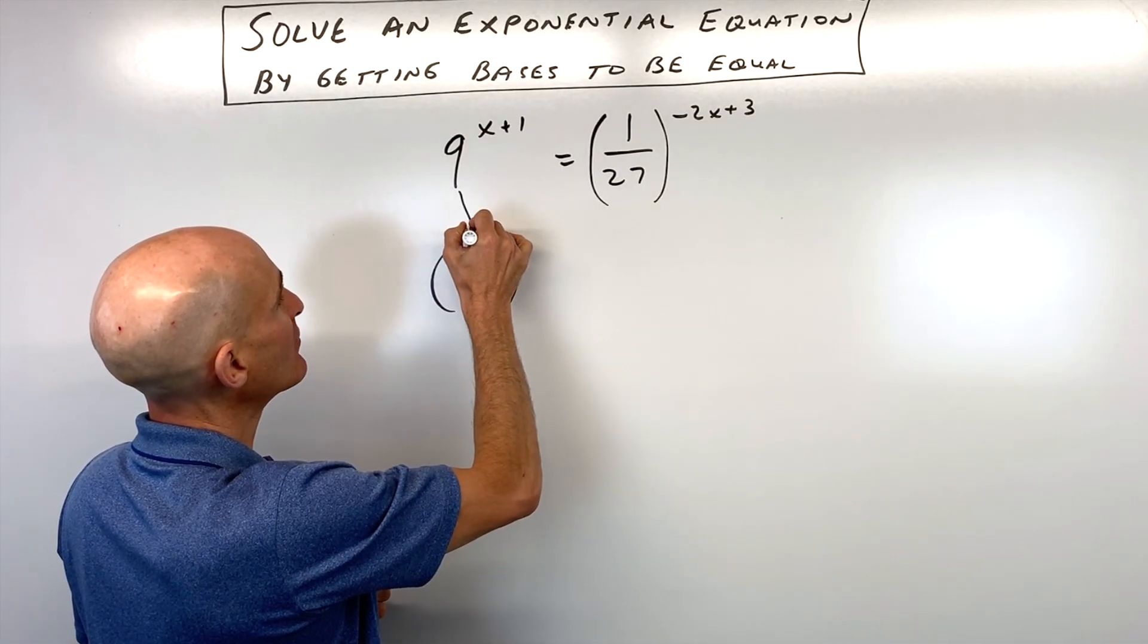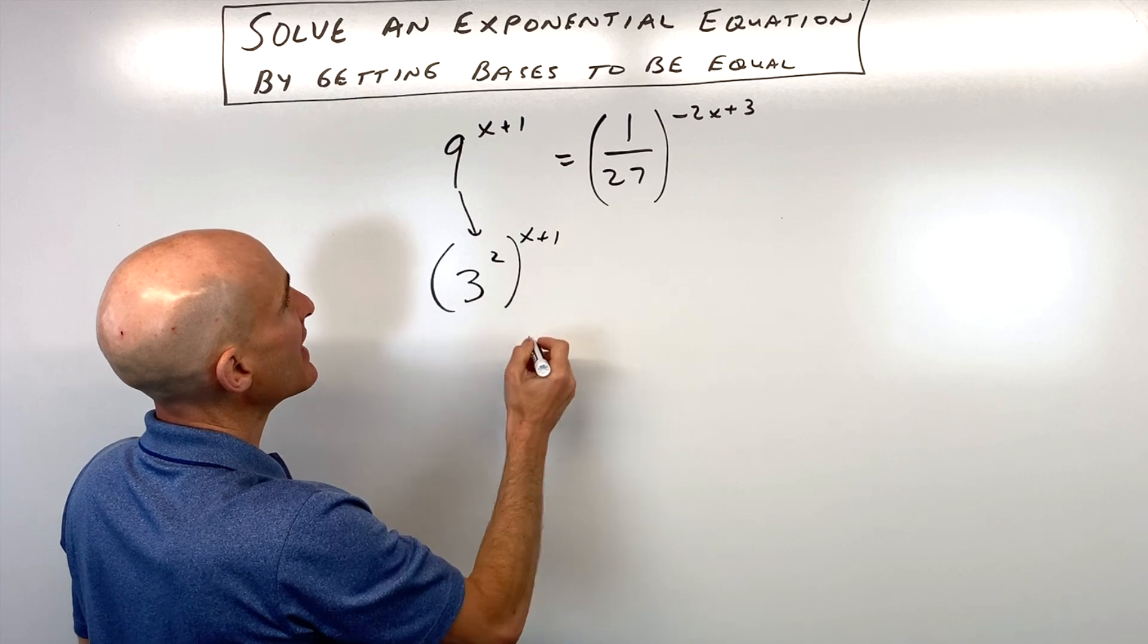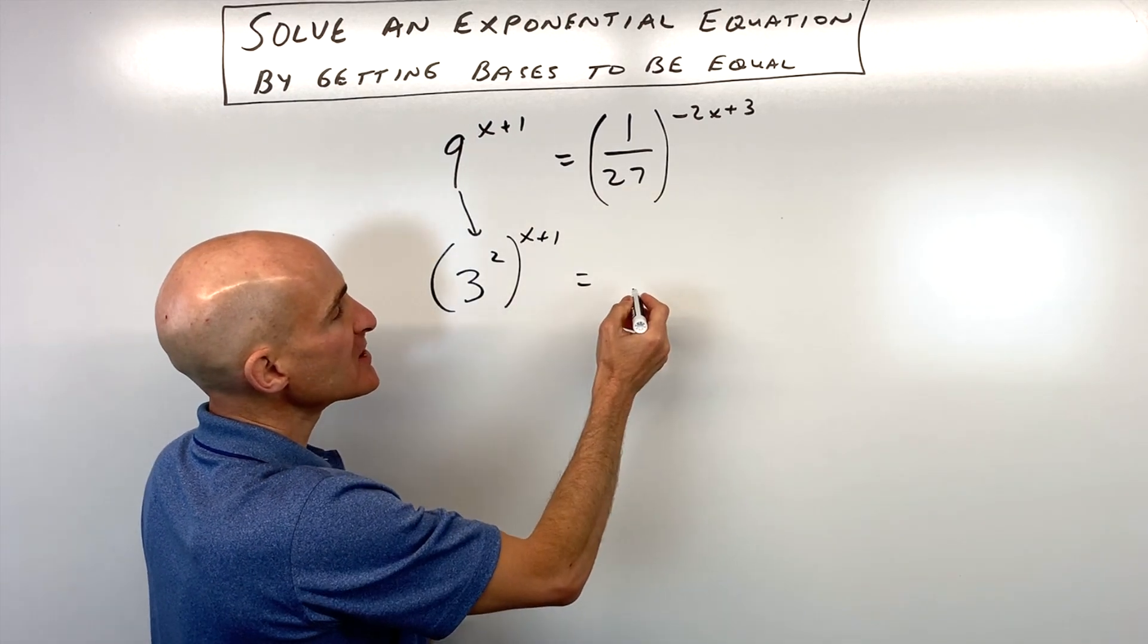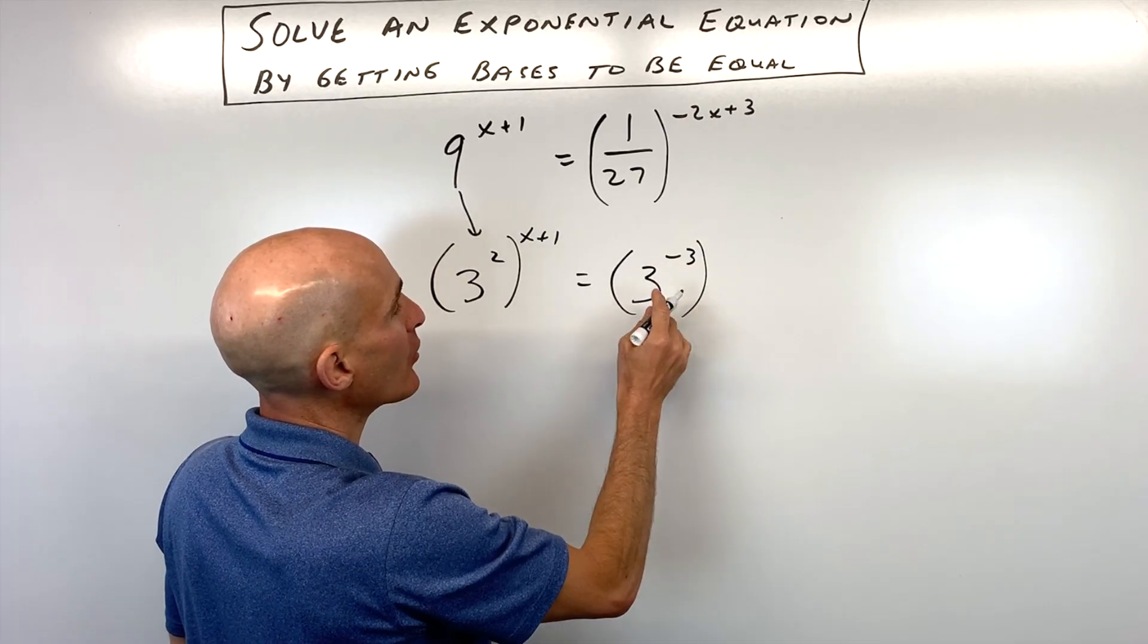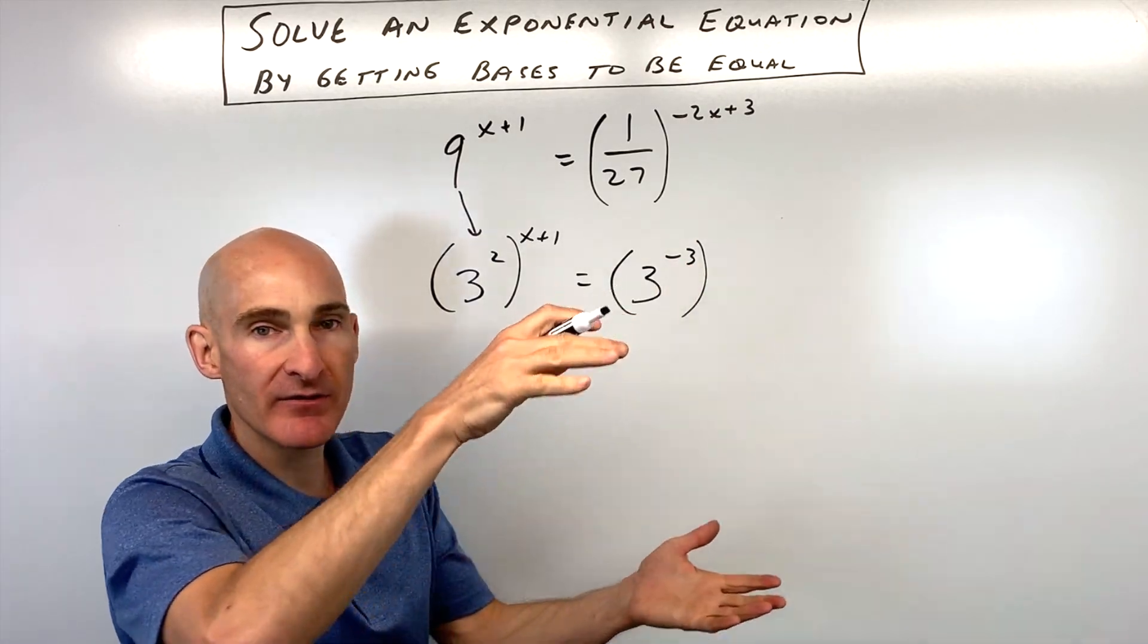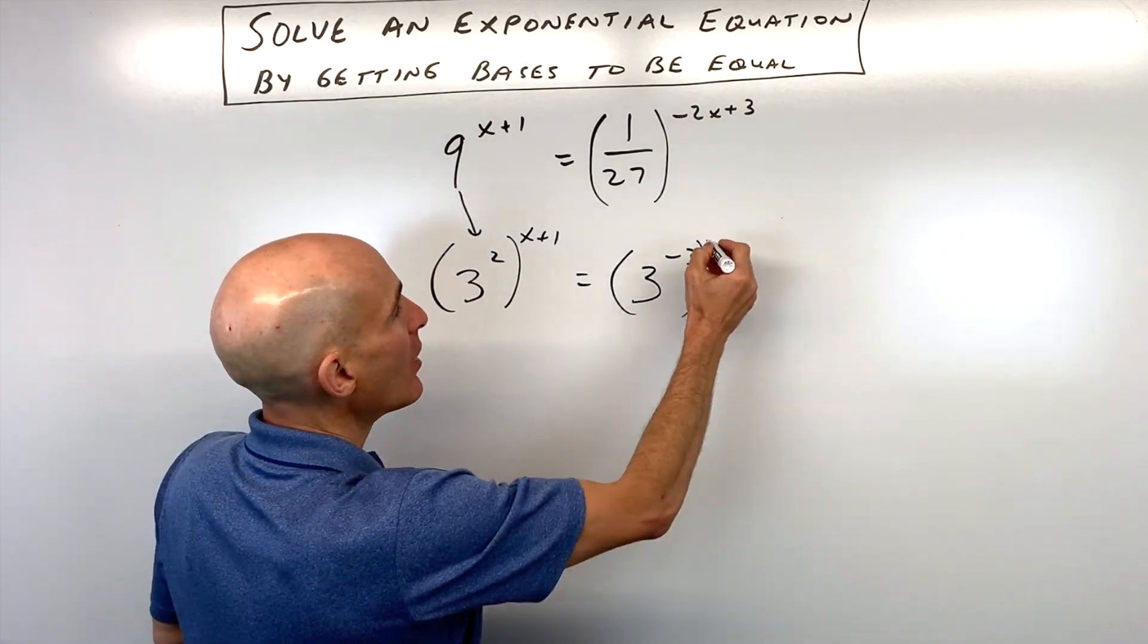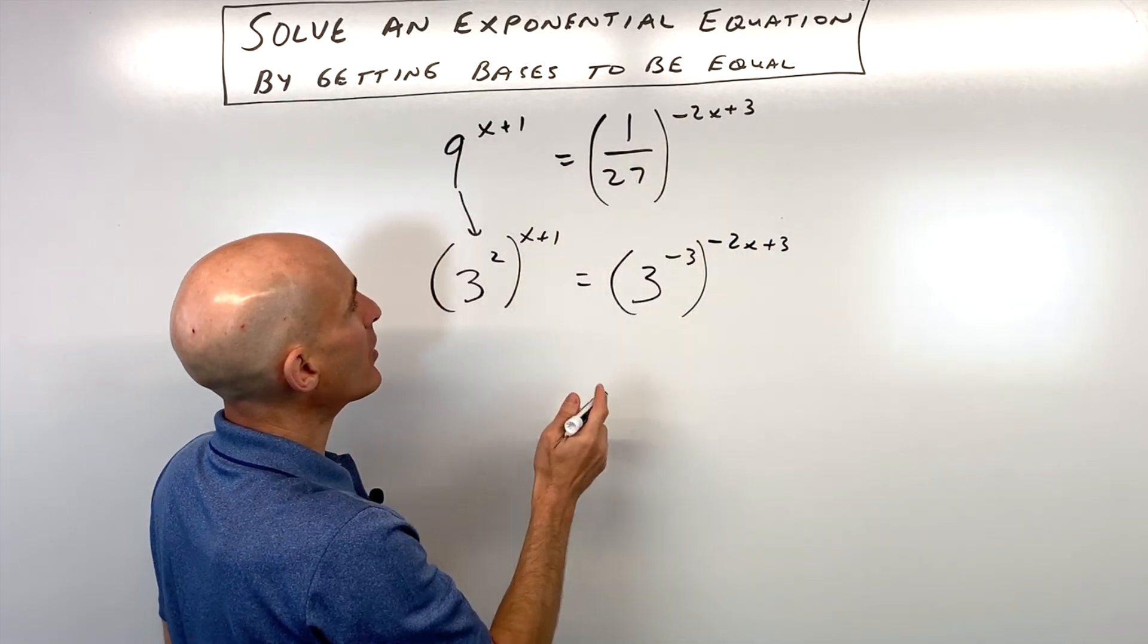So I'm replacing 9 with 3 squared, still raised to the x+1 power. 1/27 is really like 3 to the negative third power, because 3 cubed is 27, and the negative exponent means you take the reciprocal, also still raised to the -2x+3 power.